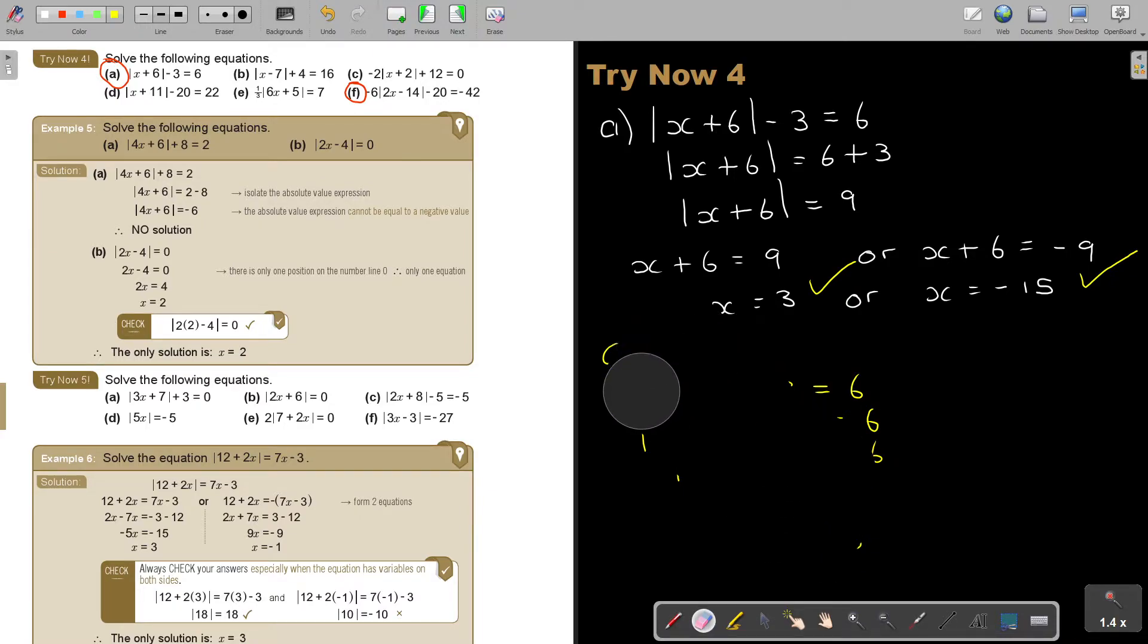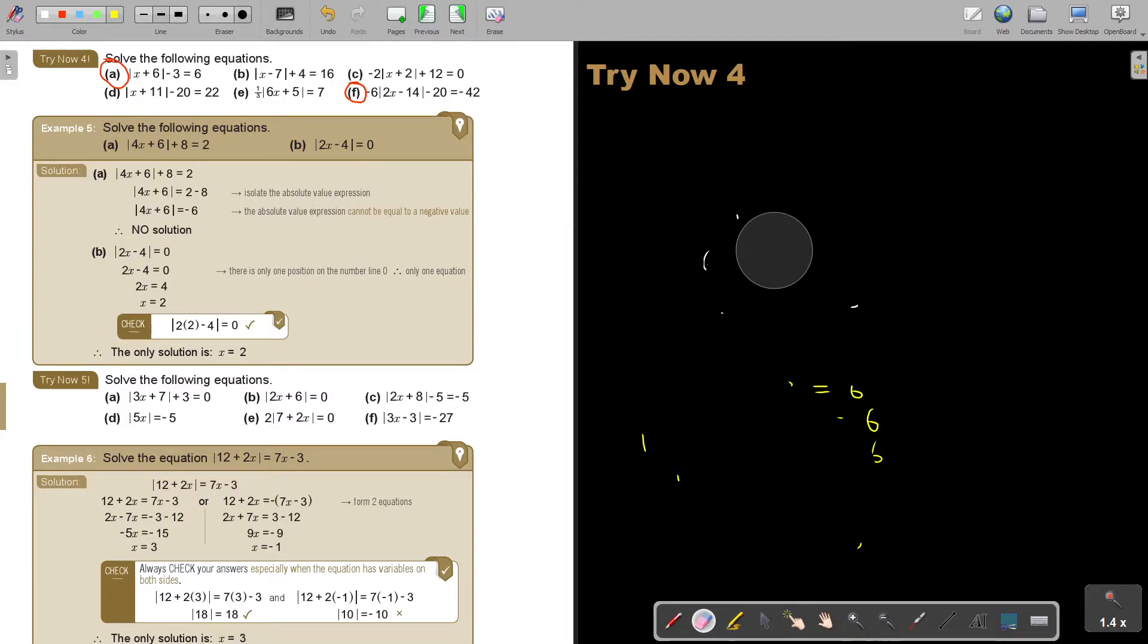Let's do number F. Number F. Let's copy it first. -6|2x - 14| - 20 = -42. I'm doing it a little bit long, not necessary.